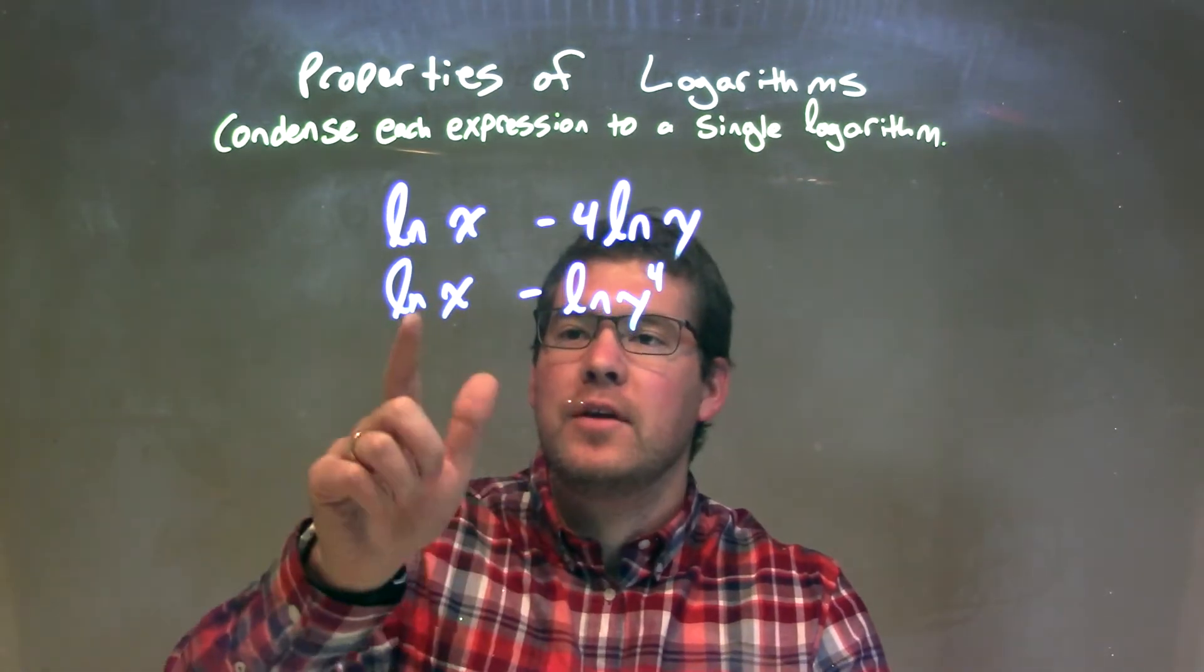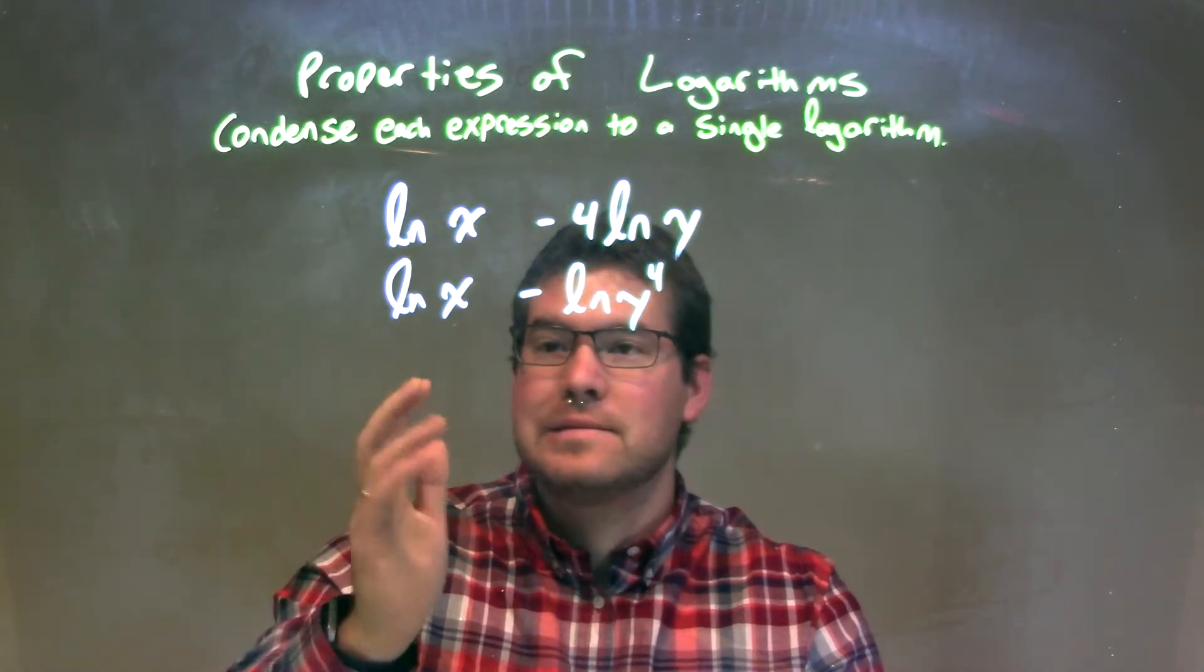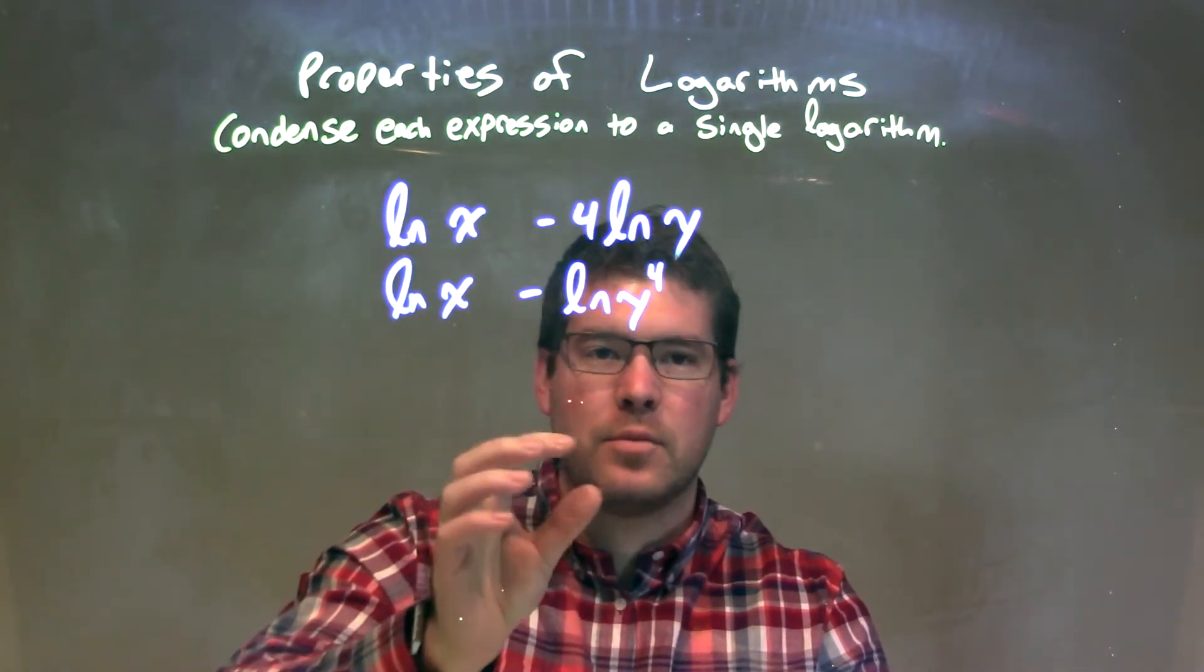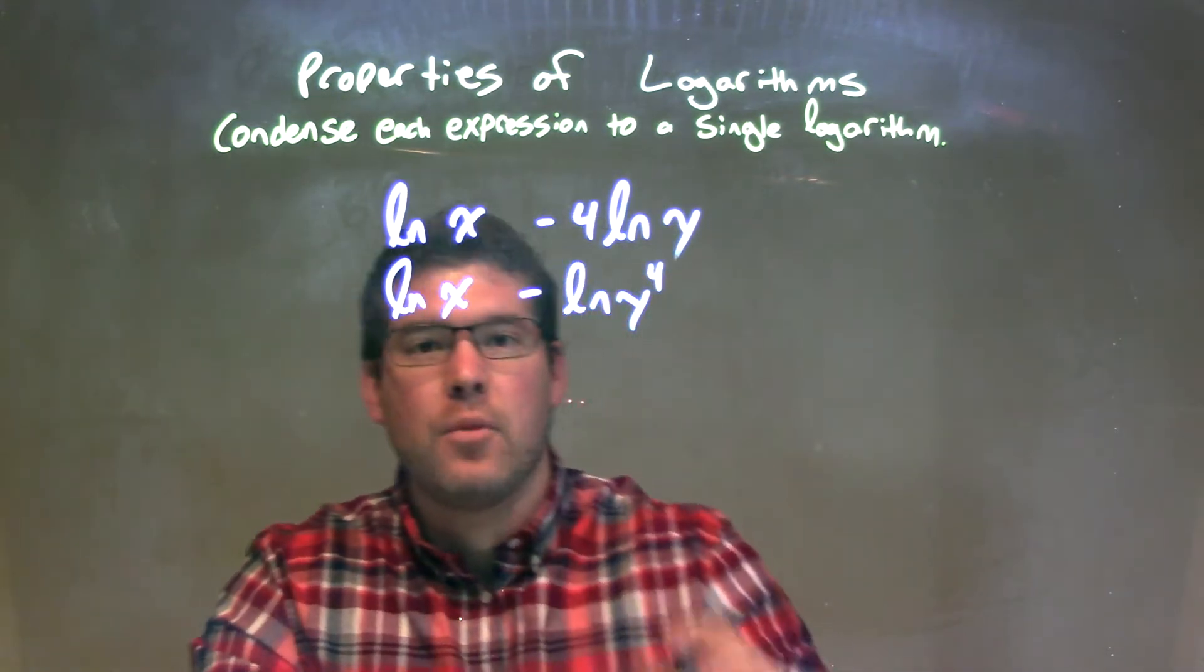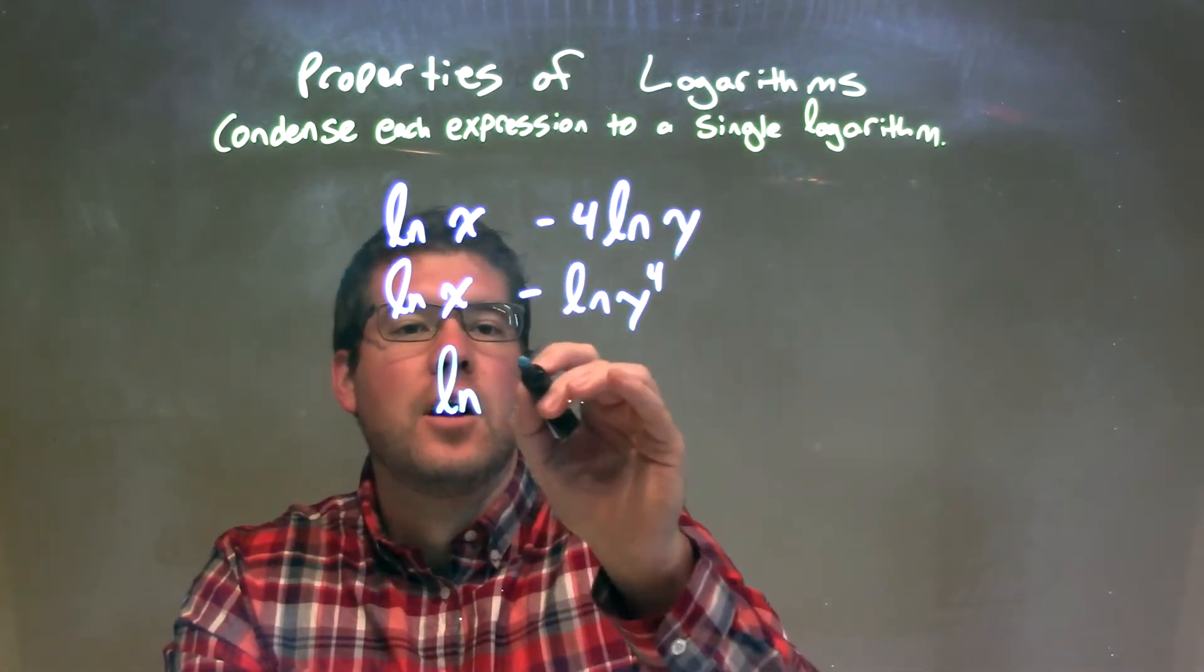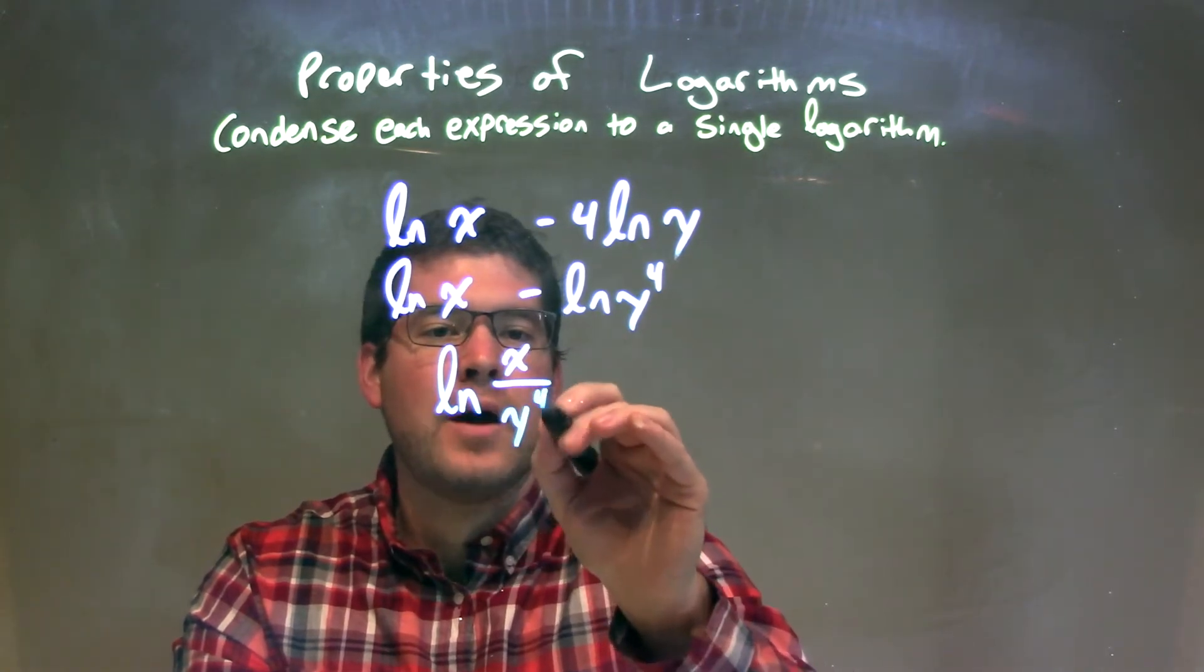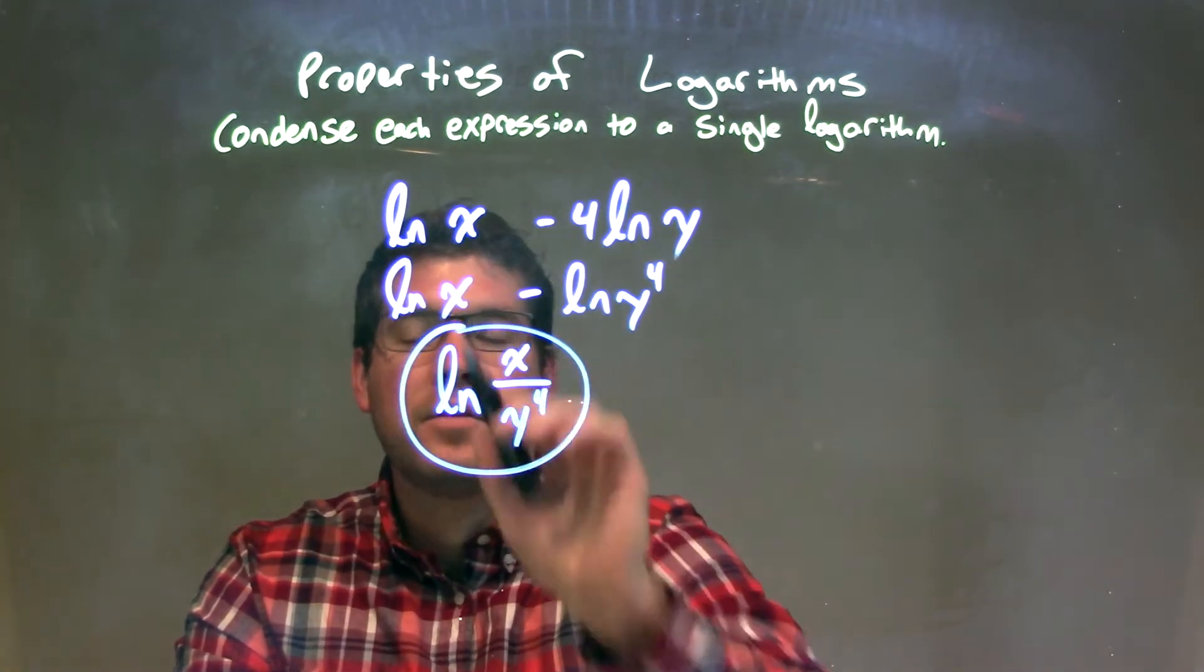Now, we both have these logs, both log base e, right, the natural log. And so we condense them together, and that subtraction becomes a division. So we have the natural log now of x divided by y to the 4th power. And that's it. This is our final answer.